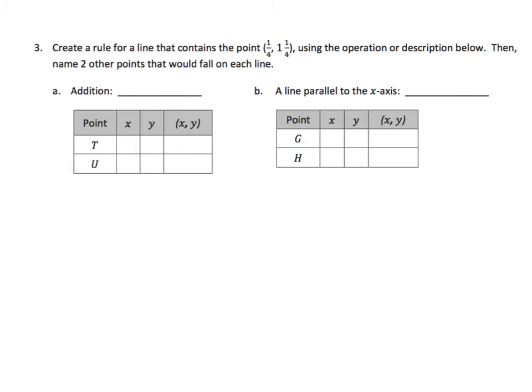In this part, we need to create rules that contain the point 1/4, 1 and 1/4, using the operations or description below. Then name two other points that would fall on that line. Well, we want addition here. So if we look at our ordered pair, we start with 1/4, and we go to 1 and 1/4. The rule is very simple. What do we have to do? What do we have to add to 1/4 to make 1 and 1/4? The answer is we need to add 1. So y equals x plus 1 is a possible rule.